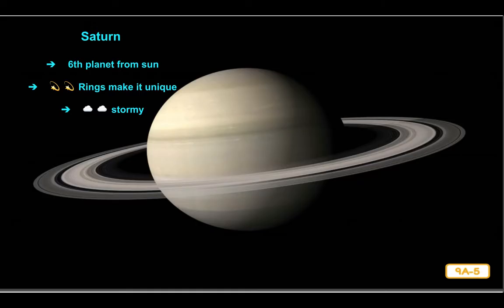Saturn has several layers with different types of clouds and it is quite stormy, though not as stormy as its neighbor Jupiter. These layers and clouds are part of the planet — remember, outer planets are made of gases. Because it is so far from the Sun, it takes Saturn nearly 30 Earth years to make one complete orbit. Different parts of Saturn rotate at different speeds, but Saturn generally rotates on its axis quickly, taking a little over 10 hours to complete one rotation.